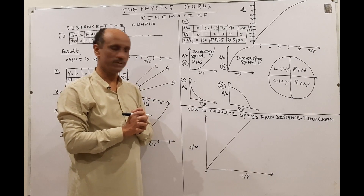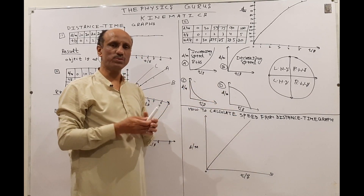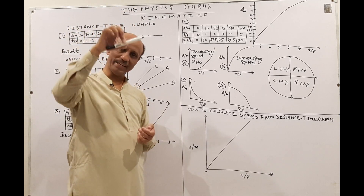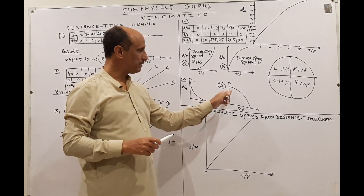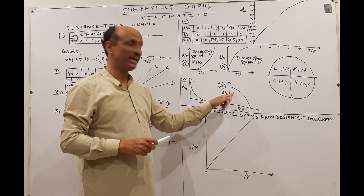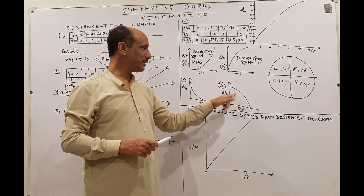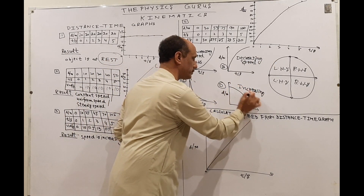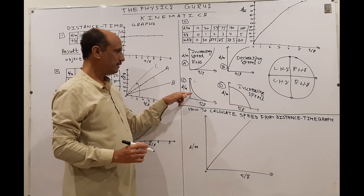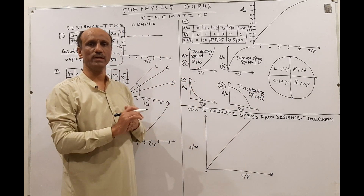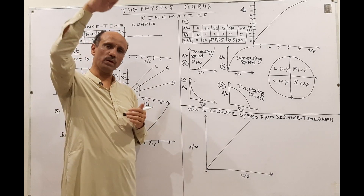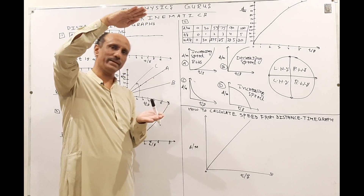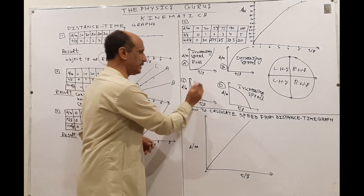Consider a ball placed at a height of 20 meters with initial speed zero. As it falls downward, its speed increases — this produces a curve on the right-hand side of the circle, representing increasing speed. Another curve represents decreasing speed, as in the case of free fall with air resistance: initially speed is high, but upthrust acts in the opposite direction, the resultant force decreases, and speed decreases — this is represented by the left-hand side curve.